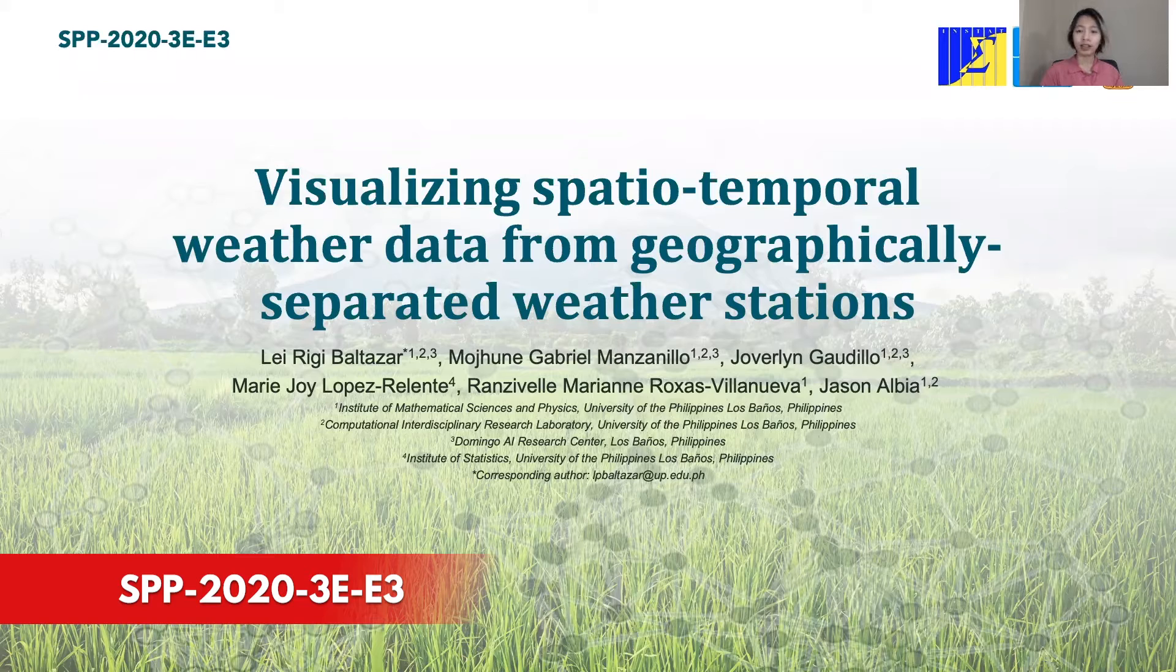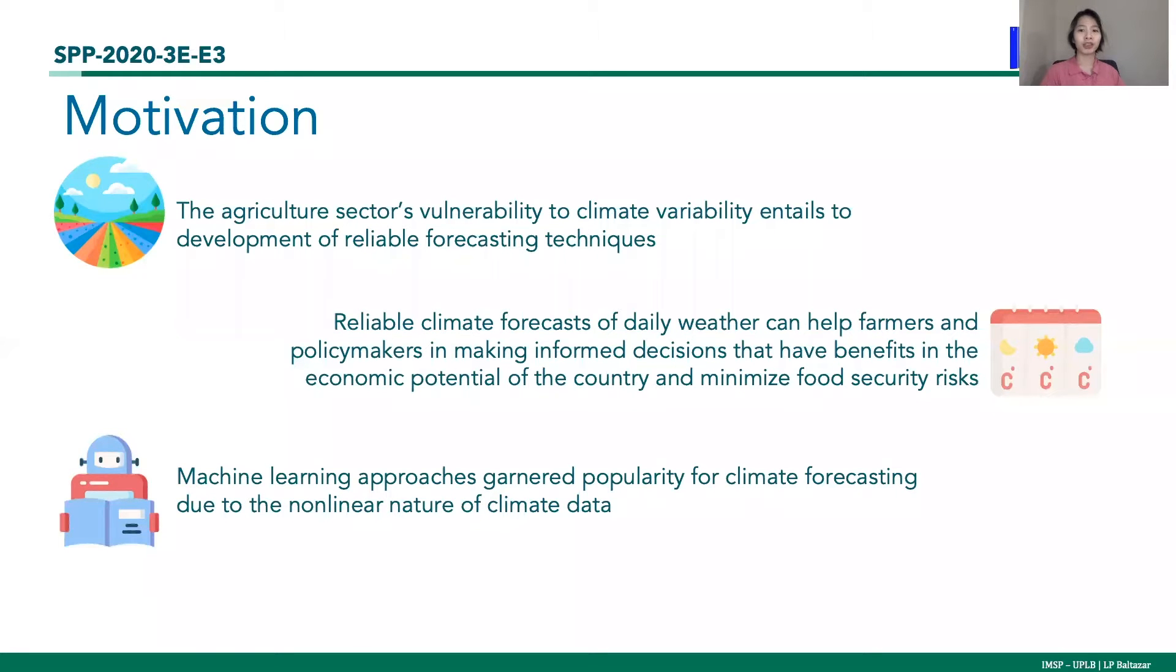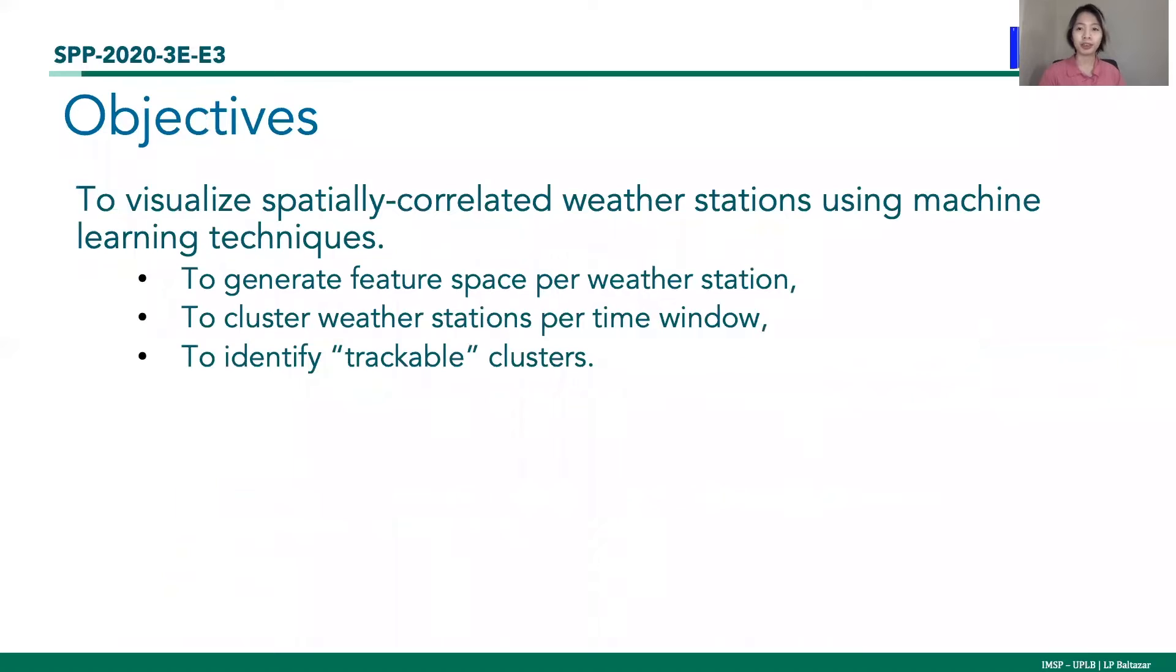The agriculture sector is vulnerable to climate variability which necessitates the development of reliable forecasting. Reliable forecasts of daily weather can help farmers and policy makers in making informed decisions that can benefit the economy of the country and minimize food security risks. Recently, machine learning approaches garnered popularity for climate forecasting due to the non-linear nature of climate data. In this preliminary work, our main objective is to visualize spatially correlated weather stations using machine learning techniques. Specifically, we aim to generate feature space per weather station, cluster weather stations per time window, and identify trackable clusters.